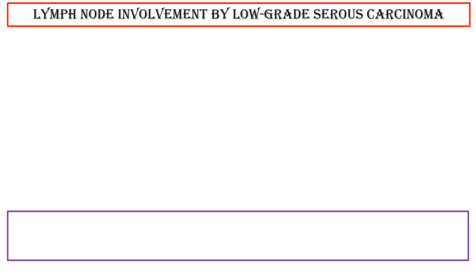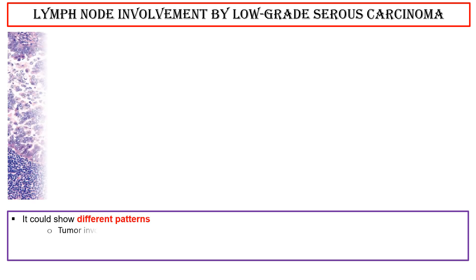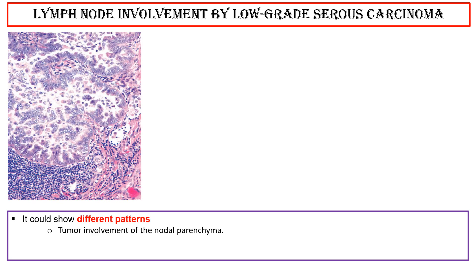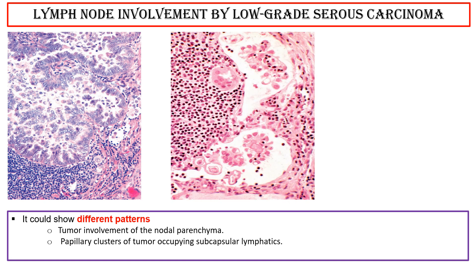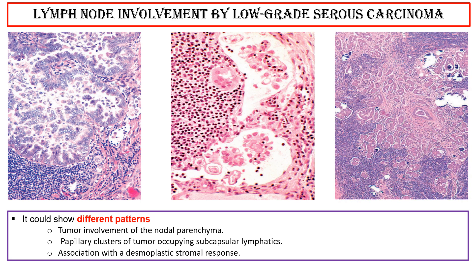Lymph node involvement by low-grade serous carcinoma can show different patterns: tumor involvement of the nodal parenchyma, papillary clusters of tumor occupying subcapsular lymphatics, and association with a desmoplastic stromal response.